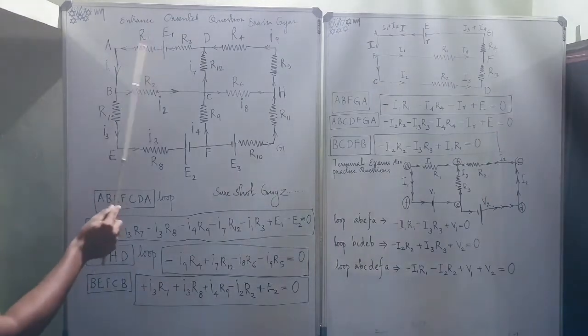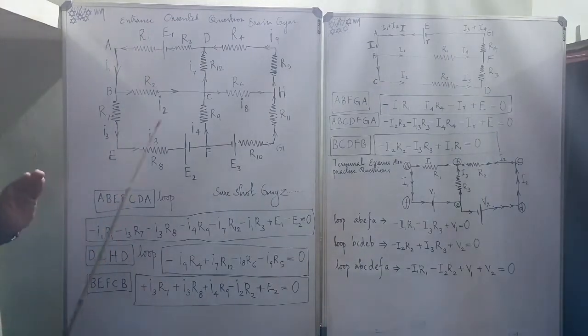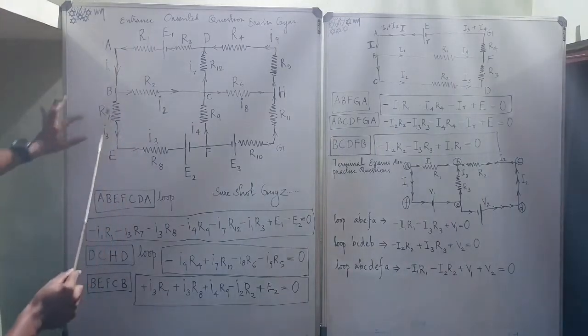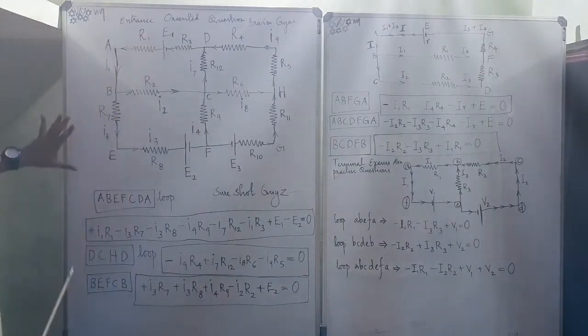So, minus is taken. Minus I1*R1. Conventionally, positive side current will be taken as minus. I am teaching you like that.